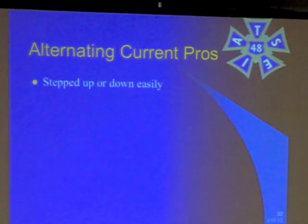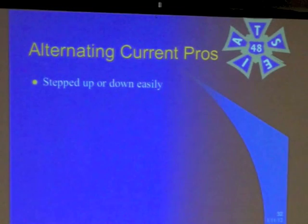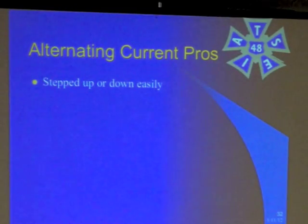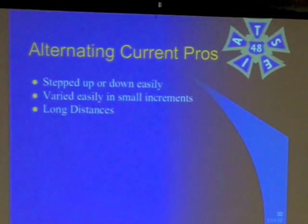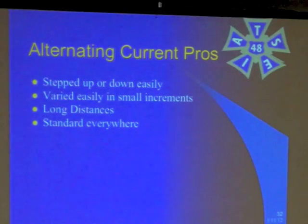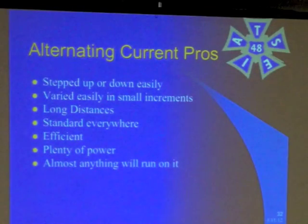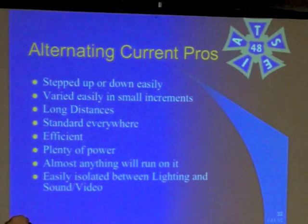What the class is mostly about is alternating current. Alternating current can be stepped up or down really easily — you run it through a transformer to step it up or down. It's very efficient. You can go from 120 volts up to 300, or from 120 down to 6 volts. You can vary it easily in small increments. You can run AC for hundreds and thousands of feet without losing it. It's the standard everywhere across the country, and almost anything we have will run on it.